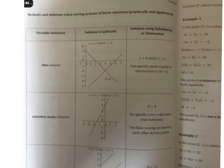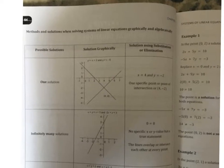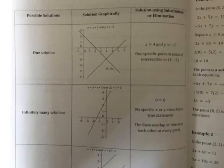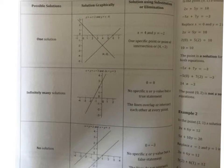This is a picture of page 64 in your book. These are the three different possibilities when you're solving a system of equations together. You can either get one solution, infinitely many solutions, or no solution. Those are the only three possibilities.